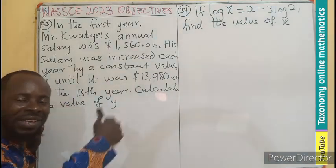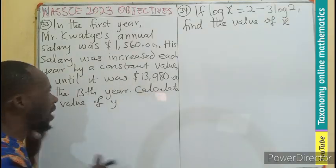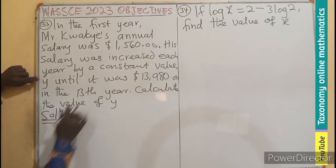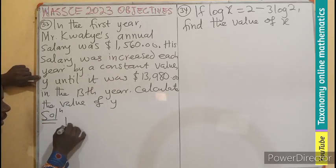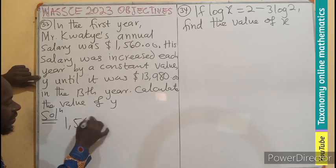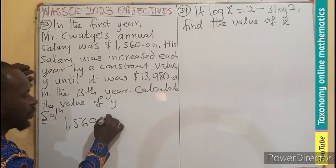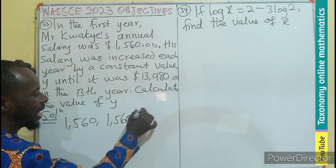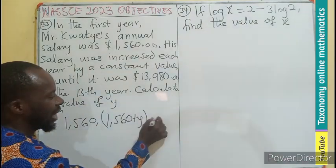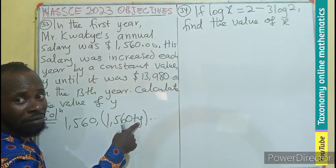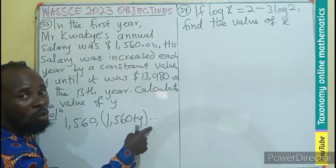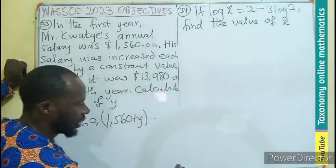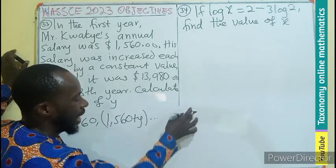So this is generating a series for us. So we can say that the first term is 1,560. The second term is going to be 1,560 + y. The third term will be 1,560 + 2y. All this is continuing until we get the 30th term, which will be 13,980.